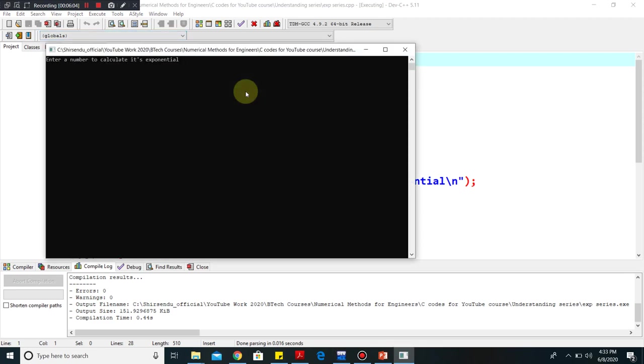You can see it is asking for a number to calculate its exponential. Say we put 1, so it is coming around 2.718 and this is the value of e. E to the power 1 means it is the value of e. You can see here it is calculating the exact value.